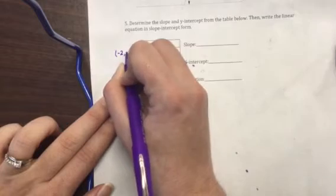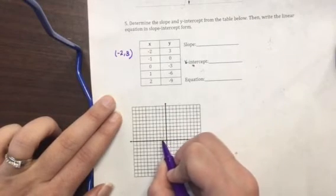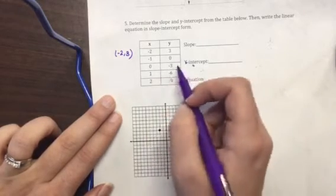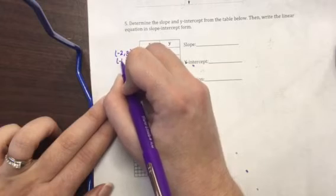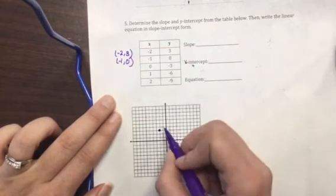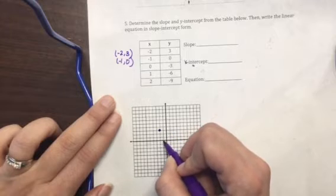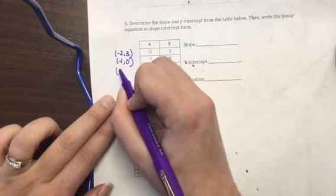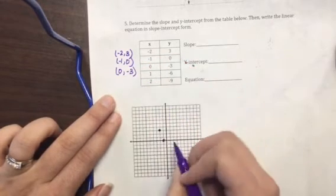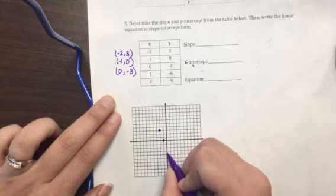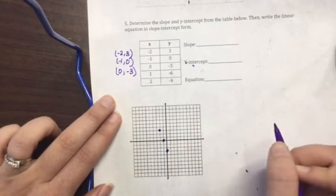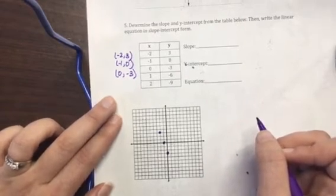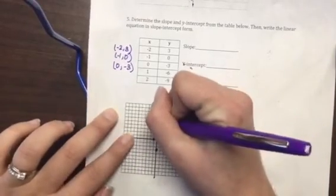So my first point is negative 2, 3. Remember, this is like an ordered pair. So left 2, up 3. There's a point. Negative 1, 0. So left 1, up 0. 0, negative 3. So up 0, down 3. I really only need 3 points. Actually, I really only need 2 points to create a line. So I'm going to stop there and I'm going to go ahead and create my line.